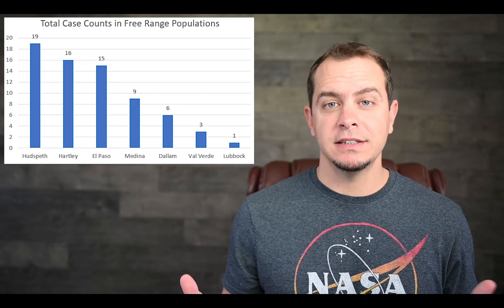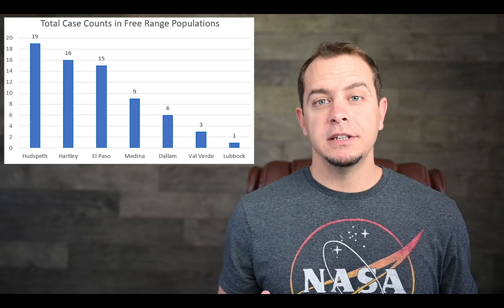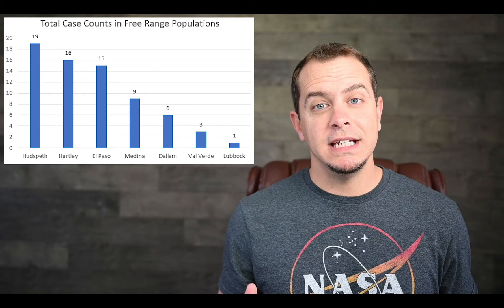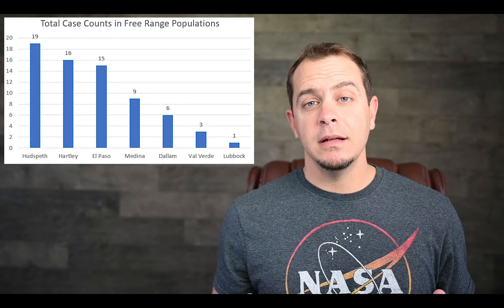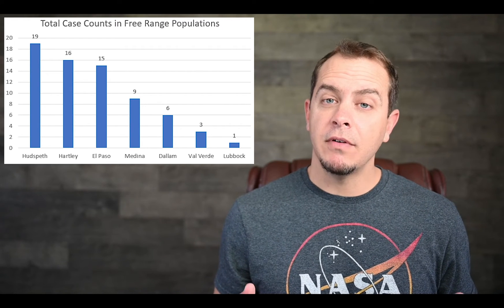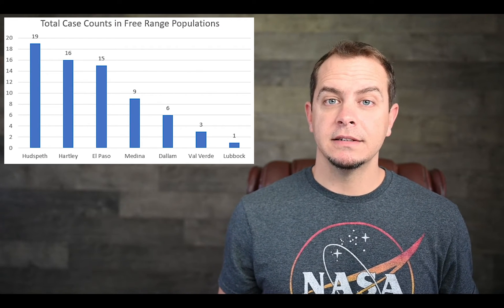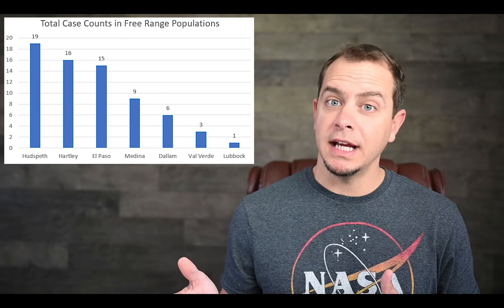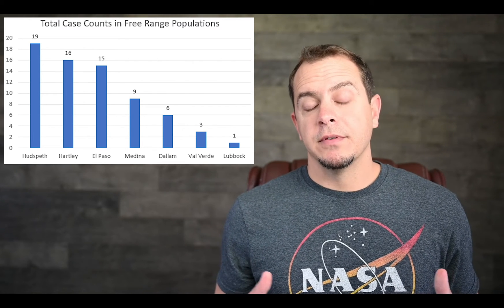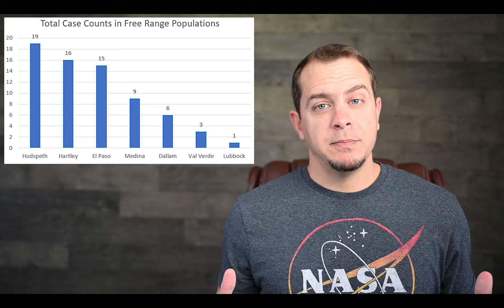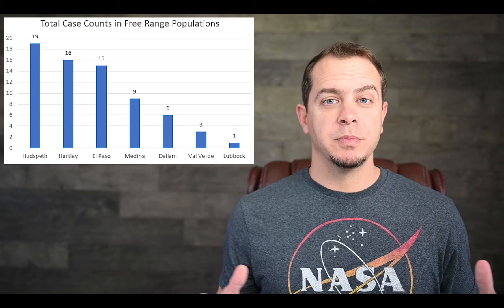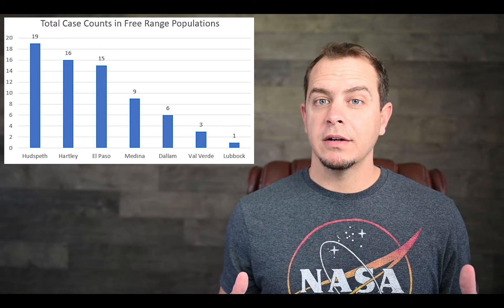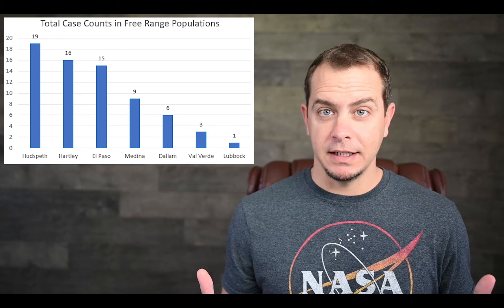Now let's look at the cases found in free-ranging populations. Hudspeth, Hartley, El Paso, Medina, Dallam, Valverde, and Lubbock counties have all had cases in free-ranging populations — so there's Medina County again. From a free-ranging perspective, case counts are much more spread out without a couple of counties showing excessive spikes.